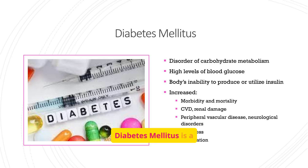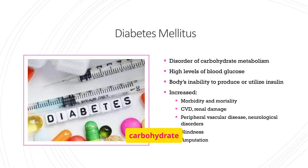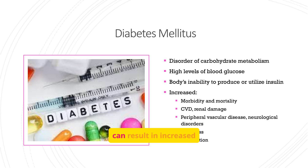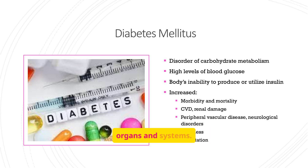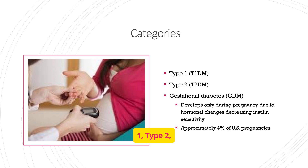Diabetes mellitus is a serious condition affecting millions worldwide. It's characterized by a disorder of carbohydrate metabolism, leading to high blood glucose levels. This can result in increased morbidity and mortality, impacting various organs and systems. We can broadly categorize diabetes into three main types: type 1, type 2, and gestational diabetes.